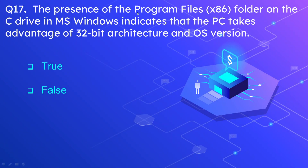Question number 17: the presence of the Program Files X86 folder on the C drive in Microsoft Windows indicates that the PC takes advantage of 32-bit architecture and OS version. The options are true and false. The correct option is false. The presence of the X86 folder in Windows shows that if Windows is 64-bit, it also supports applications that run on 32-bit. This folder indicates that you can run X86 or 32-bit applications on a 64-bit system.